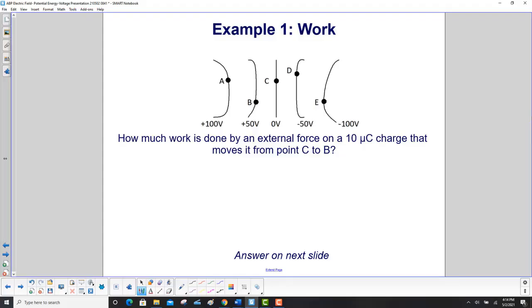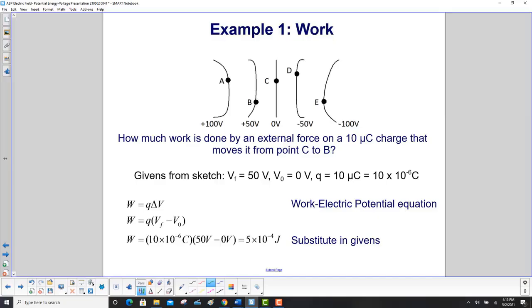How much work is done by an external force on a 10 microcoulomb charge that moves from point C to point B? We look at the sketch and see our final voltage at point B is 50 volts. The initial voltage is zero. Q is 10 microcoulombs, which is 10 times 10 to the minus 6 coulombs.